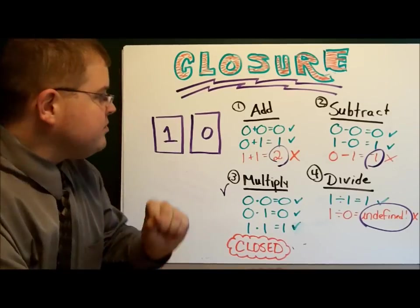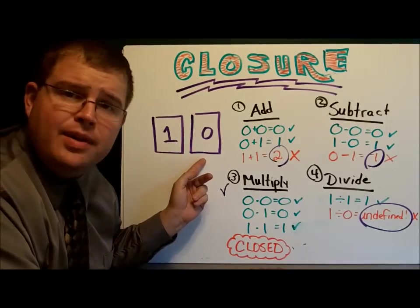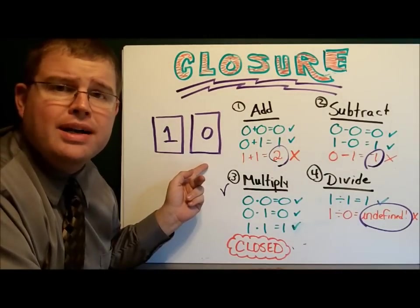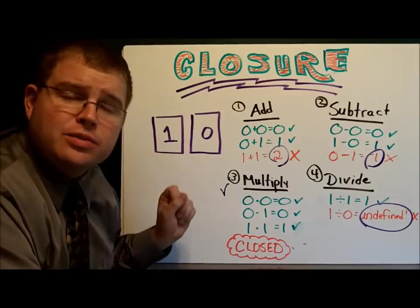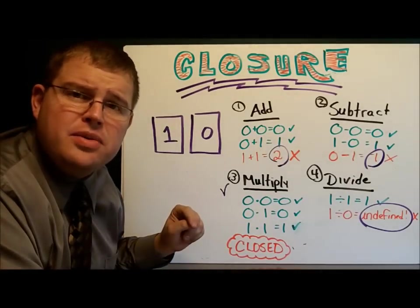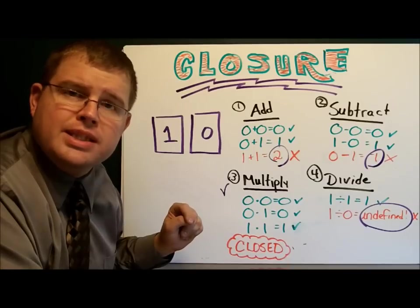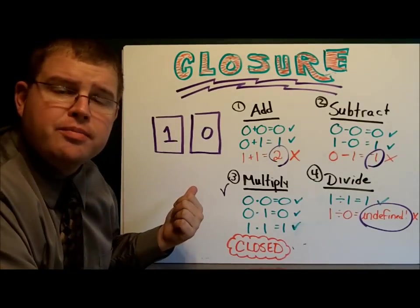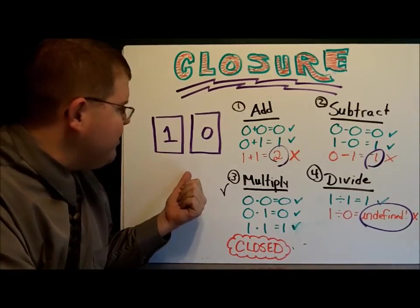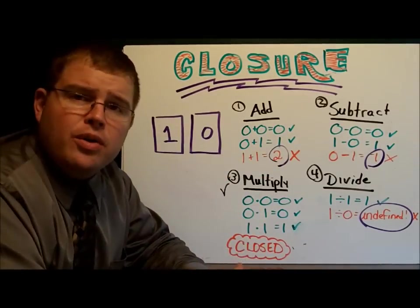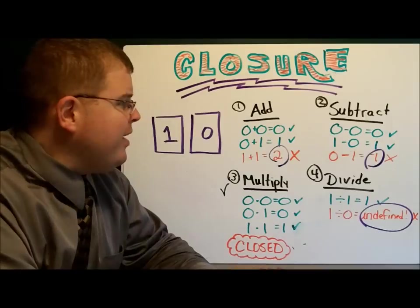Let's take a look. Zero plus zero equals zero. Yeah, I can use the same card twice. Zero plus one is one. One plus zero is one. What's that? One plus one? One plus one is two. Two is not one of my choices, is it? Well, it looks like it didn't work under addition. It looks like you won that round.